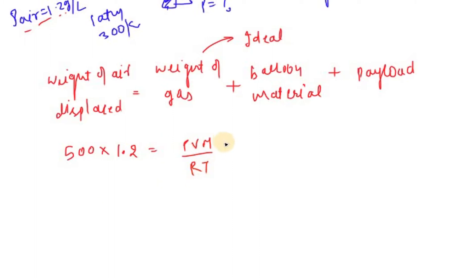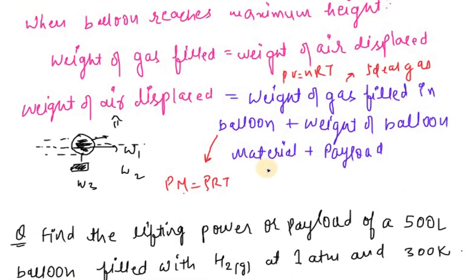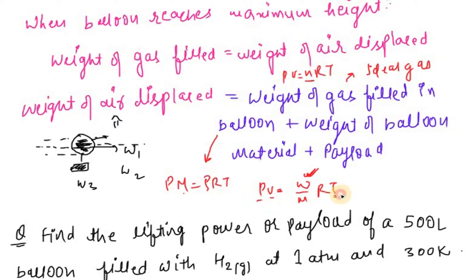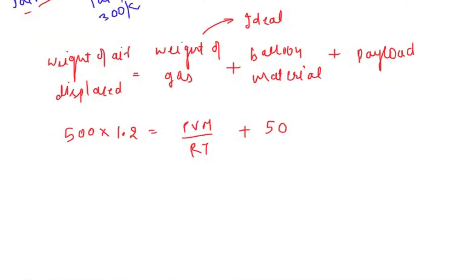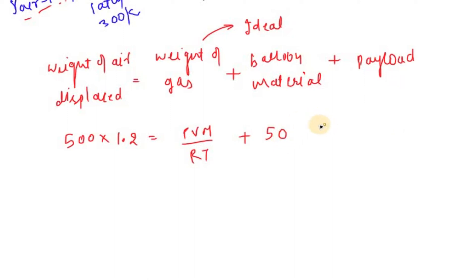From PV = (W/M)RT, we get weight of gas W = PVM/RT. Pressure is 1 atmosphere, volume is 500 liters, molar mass of hydrogen H2 is 2 g/mol, R is 0.0821 L·atm/(mol·K), and temperature is 300 Kelvin. Balloon material is given as 50 grams.